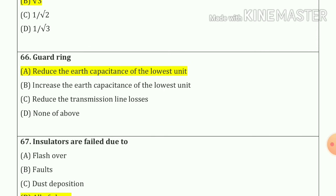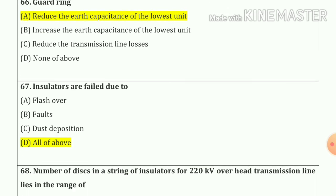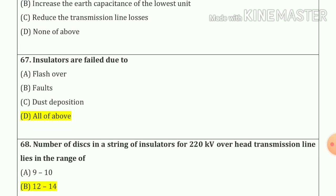Question number 66: guard ring reduces the earth capacitance of the lowest unit — option number A. Question number 67: insulators fail due to all of the above — the answer is option number D: all of the above (A, B, and C).